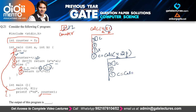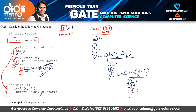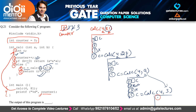Line 5 becomes C = cal_C(4, 27/3) = cal_C(4, 9). Again, A is 4, B is 9. Line 2 increments counter to 3. Line 5 then calls cal_C(4, 9/3) = cal_C(4, 3). In this next recursive call, line 2 increments counter to 4, and line 3 is now executed since B equals 3, returning A×A×A = 4×4×4 = 64.